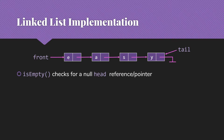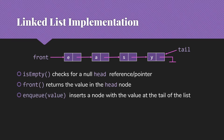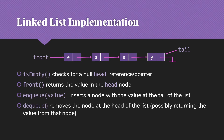With the linked list implementation, isEmpty will simply check for a null head reference or pointer, just as we do with the stack. Front is going to return the value in the head node. We will enqueue values at the end of the list, at the tail, because this is efficient — we can do that in constant time, even with a singly linked list. And dequeue will remove things at the head of the list. So the head of the list is the front of the queue, and the tail of the list is the back or rear of the queue.